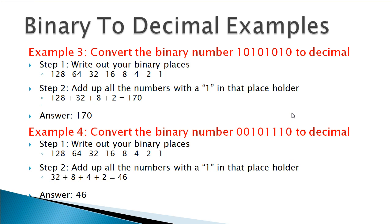How about 10101010 — where we're just alternating? No different. We have a 1 in the 128s place, a 0 in the 64s, a 1 in the 32s, a 0 in the 16s, a 1 in the 8s, a 0 in the 4s, and a 1 in the 2s place. All the places with a 1 add up to 170.